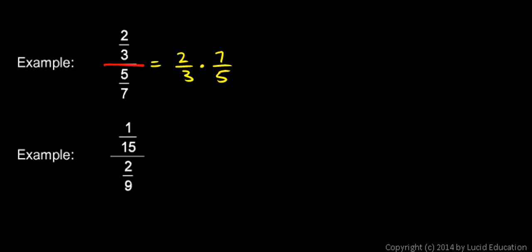I'm dividing by 5 sevenths, so that's the same as multiplying by the reciprocal of 5 sevenths. But my numerator doesn't get flipped upside down.